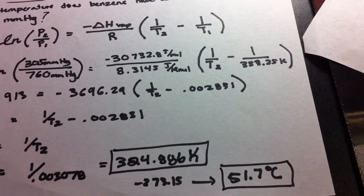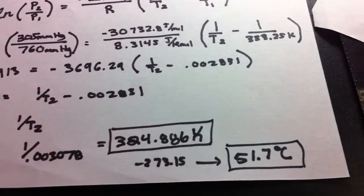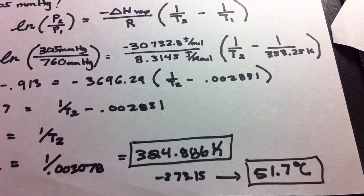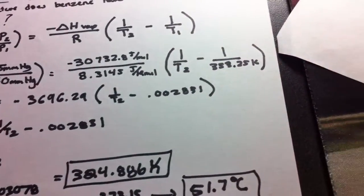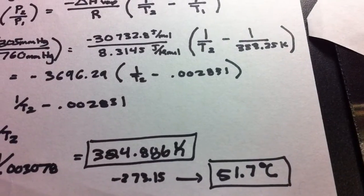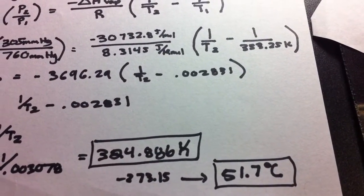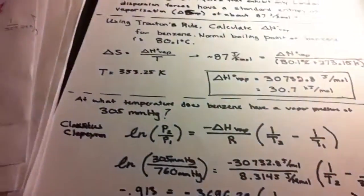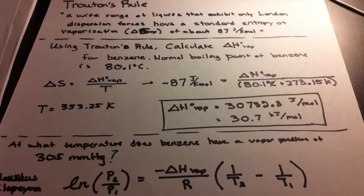Now, that's the answer in Kelvin, and if we want to take it a step further, we minus the 273.15 from the Kelvin, and we get our temperature in degrees Celsius, 51.7 degrees. And that's basically Troughton's rule in a nutshell.